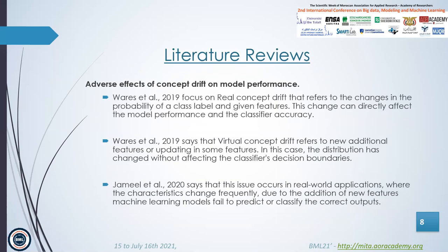The first study focused on real concept drift, which refers to changes in the probability of a class label given features. This change can directly affect model performance and classifier accuracy. Virtual drift refers to new additional features or updating existing features. In this case, the distribution changes without affecting the classifier's decision boundaries. Another study notes that this issue occurs in real-world applications where characteristics change frequently. Due to the addition of new features, machine learning models fail to predict or classify the correct outputs.